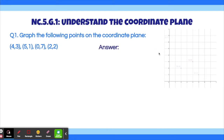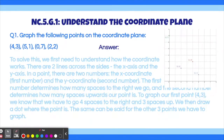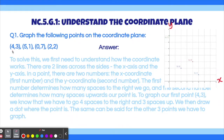Okay, so here is our answer. To solve this, we first need to understand how exactly the coordinate plane works. We have two lines that are the two axes. We have the x-axis, which goes left and right, and we have the y-axis, which goes up and down. For each coordinate point, there is a first number and a second number. The first number is always the x-coordinate, and the second number is always the y-coordinate.